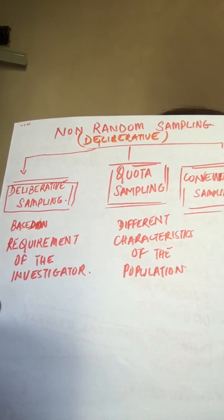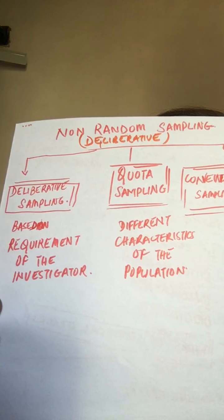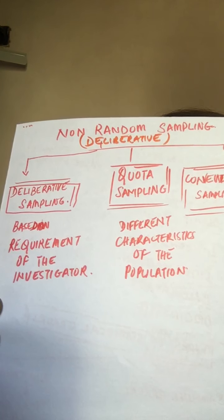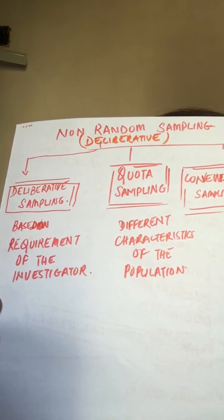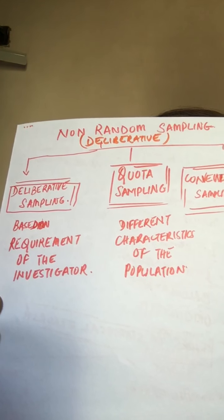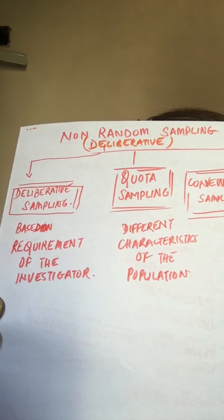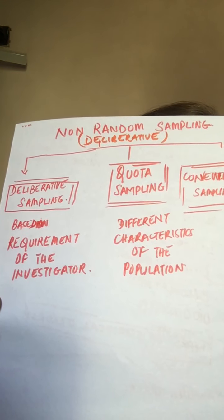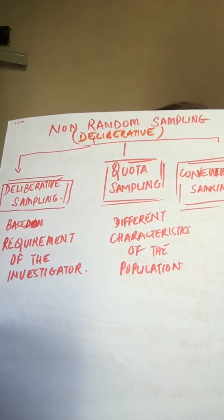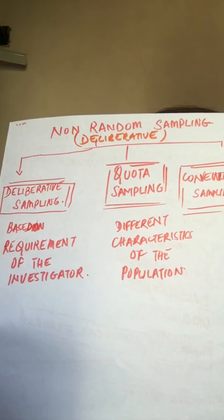Suppose in a budget reaction survey, the interviewer may be told to interview 100 people in a particular area. Out of 100, 25% should be housewives, 25% salaried class, 20% industrialists, 15% farmers, 10% traders, and 5% students.